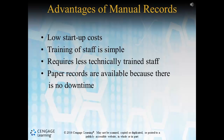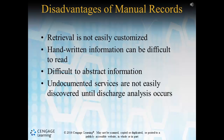Let's review the advantages and disadvantages of manual paper-based and automated electronic record systems. One primary advantage of manual record keeping is that it's relatively cheap to start up and training is straightforward for a multi-generational staff, as technical skills are not necessarily required. With a paper-based system the notion of downtime is non-existent. On the downside, retrieval is not as easy as in the electronic world, handwritten information can be hard or impossible to read — a huge patient safety issue that has plagued healthcare for years. The abstraction process is more difficult, and gaps in documentation are hard to identify, leaving incomplete charts and decreasing funding for providers.